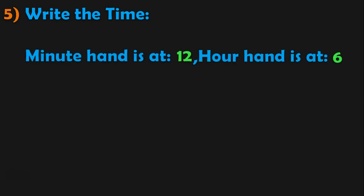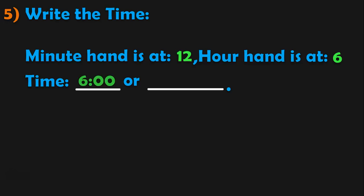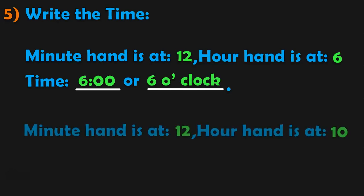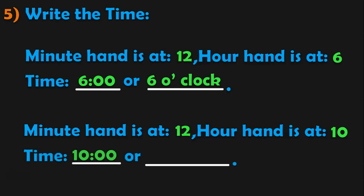Write the time. The minute hand is at 12 and the hour hand is at 6 — what is the time? The answer is 6:00 or 6 o'clock. Another example: minute hand is at 12 and the hour hand is at 10 — the time is 10:00 or 10 o'clock.